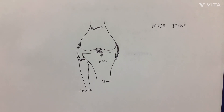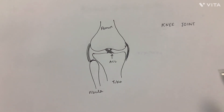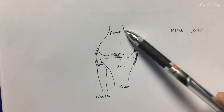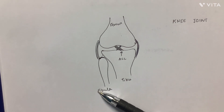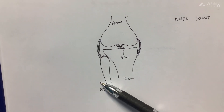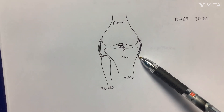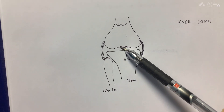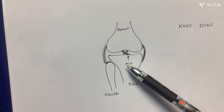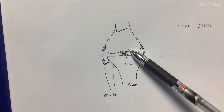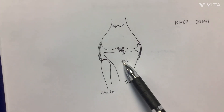The second joint we're looking at is the knee joint. Here you can see the upper thigh bone, the femur, and then the tibia and fibula — the shin bone and the outer bone. There are ligaments towards the sides holding the knee in, and also two crossover ligaments called the anterior cruciate ligament and the posterior cruciate ligament.